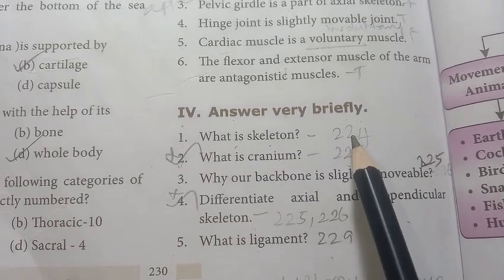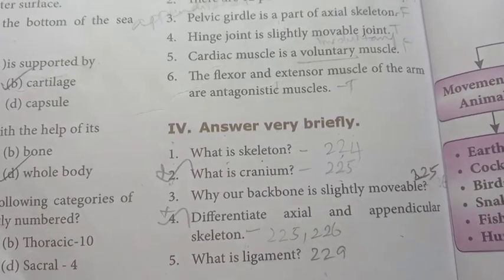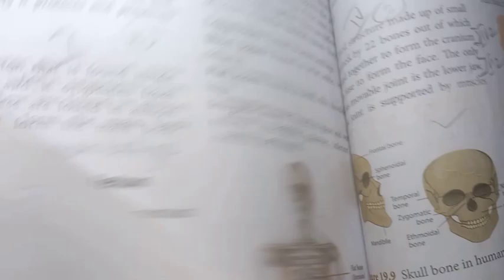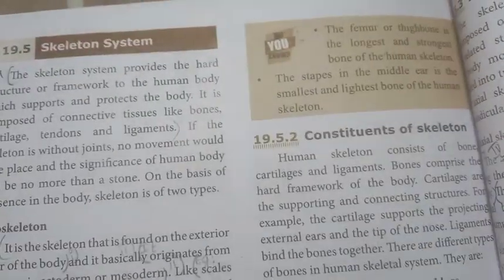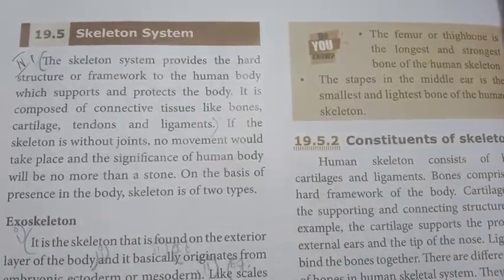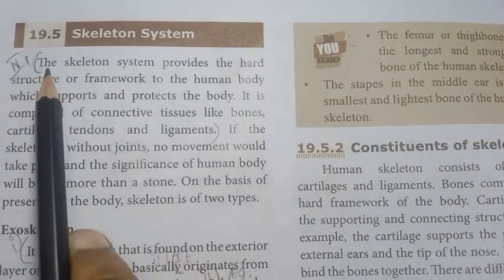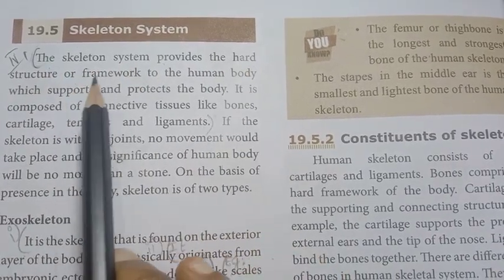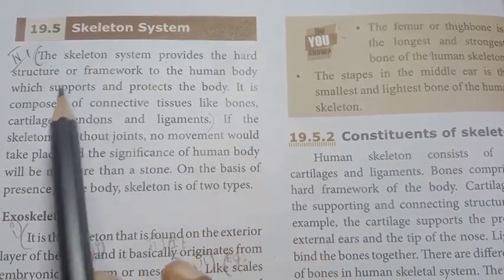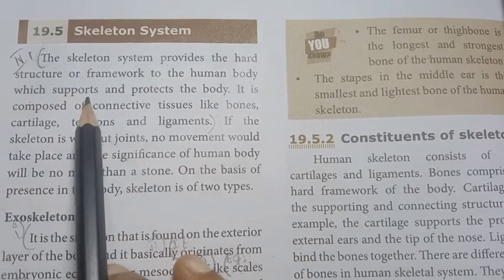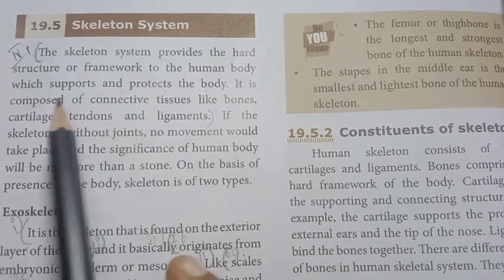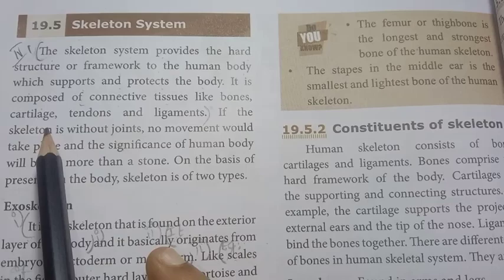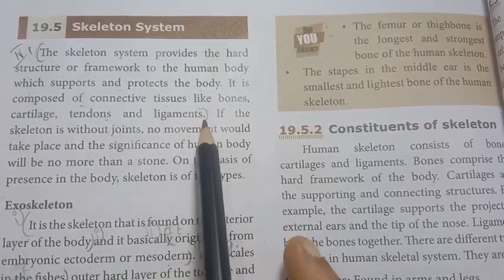What is skeleton? The skeleton system provides the hard structure or framework to the human body which supports and protects the body. It is composed of connective tissue like bones, cartilage, tendons and ligaments.